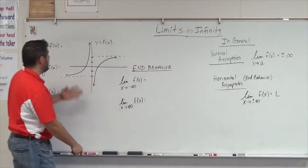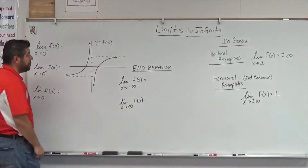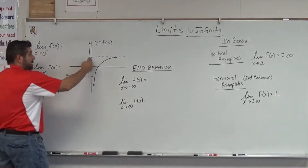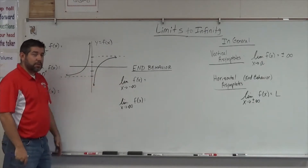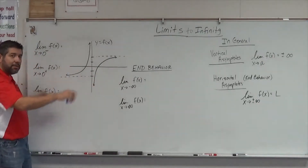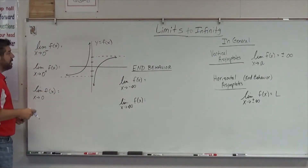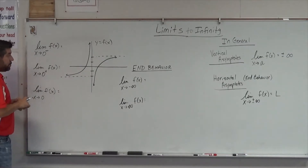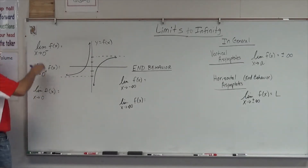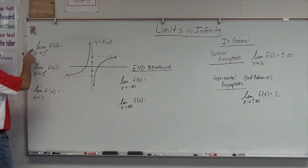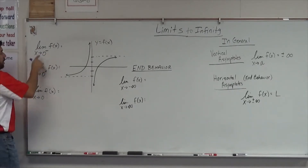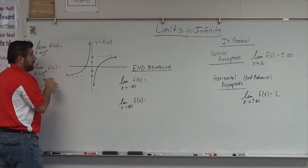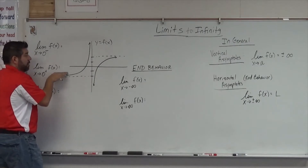So let's take a look at an example. We've got this graph here with two horizontal asymptotes, and yes, we can cross the horizontal asymptotes — we'll talk about that in just a second. So what is the limit? The question is: what is the limit as x approaches 0 from the left?